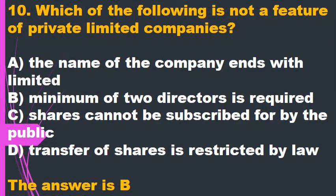Question 10. Which of the following is not a feature of private limited companies? A. The name of the company ends with 'limited.' B. Minimum of two directors is required. C. Shares cannot be subscribed for by the public. D. Transfer of shares is restricted by law. The answer is B.